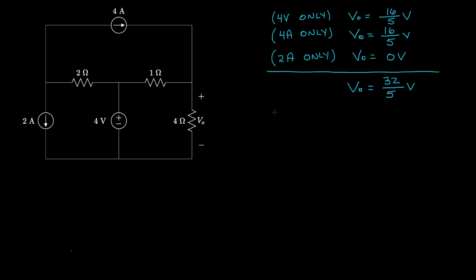Rather than solving three separate circuits — one with only the 4-volt source, one with only the 4-amp source, and one with only the 2-amp source — we could instead solve for VO in just two circuits. One circuit could have only the 2-amp source with the others set to 0, and another could have the 4-amp and 4-volt sources both active with the 2-amp source set to 0. Superposing those two results gives the same final VO.